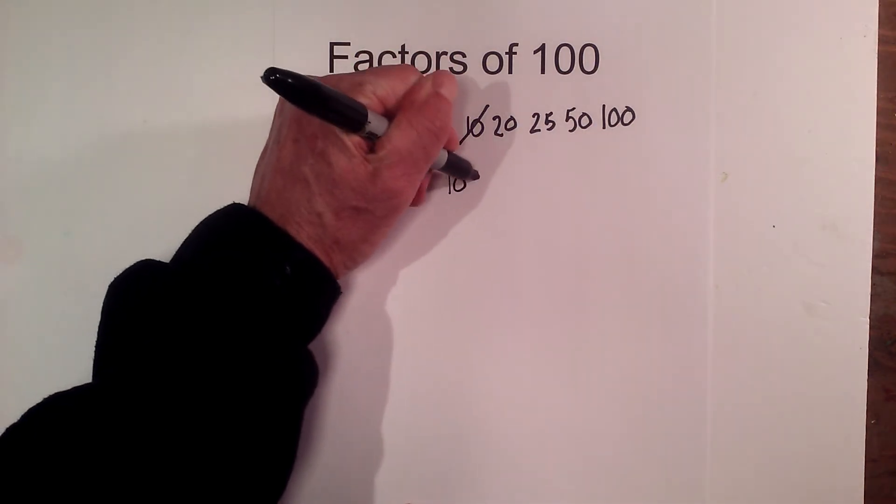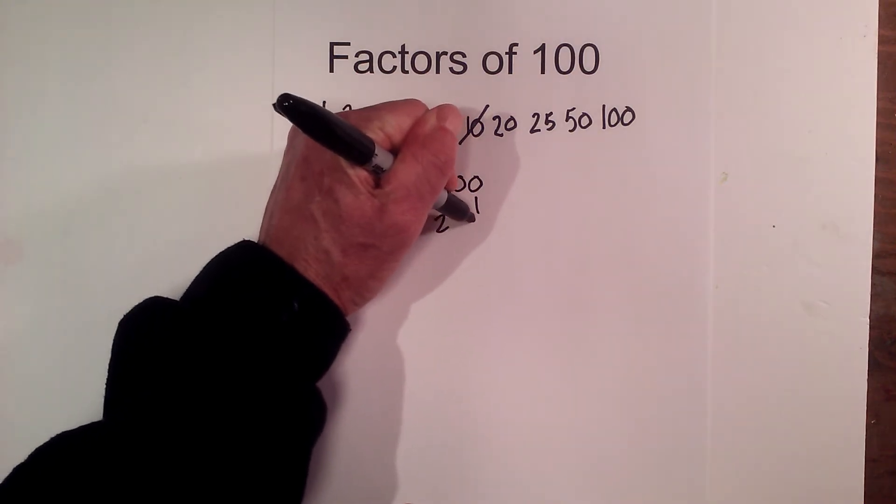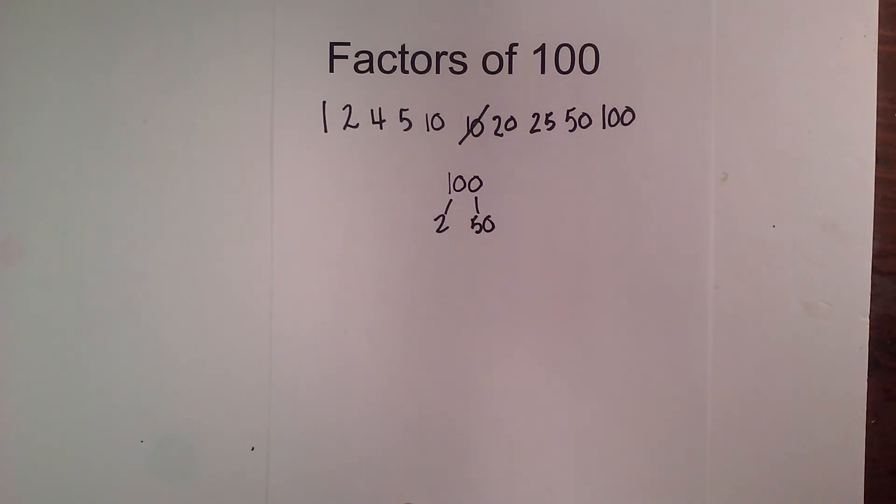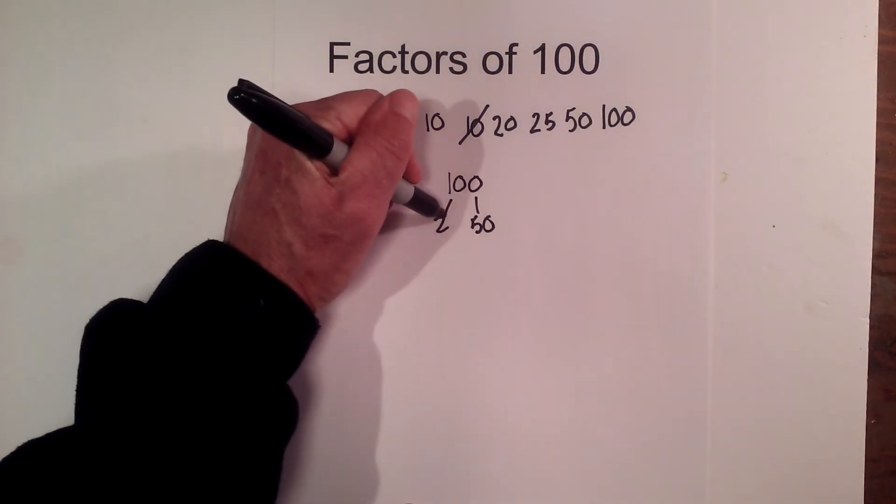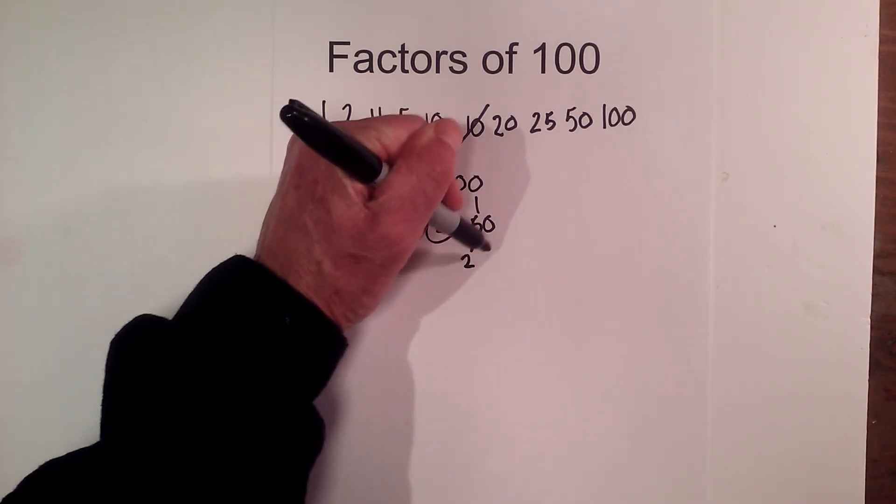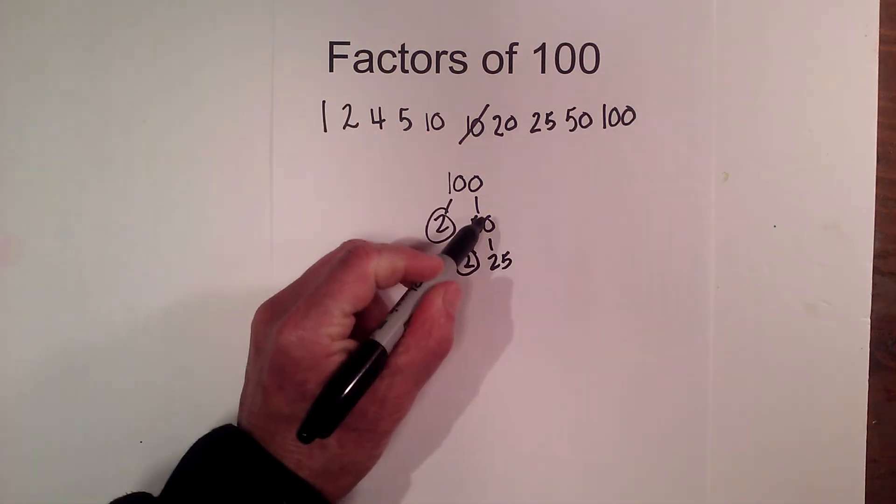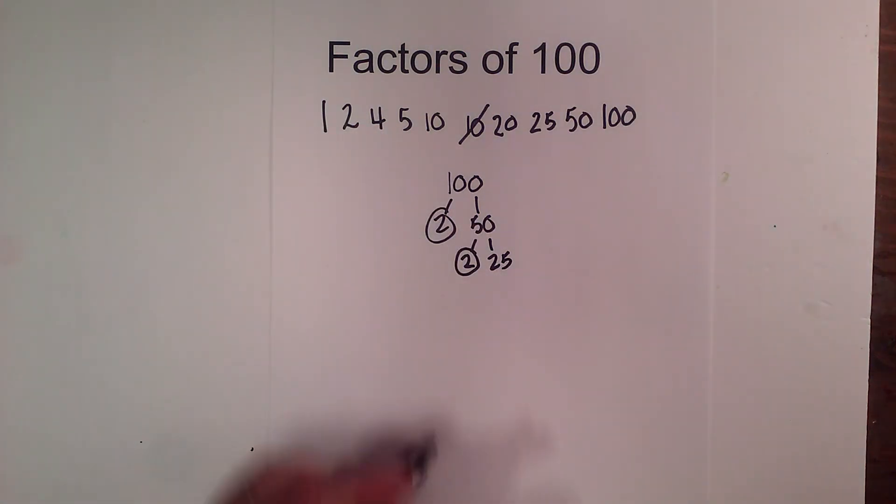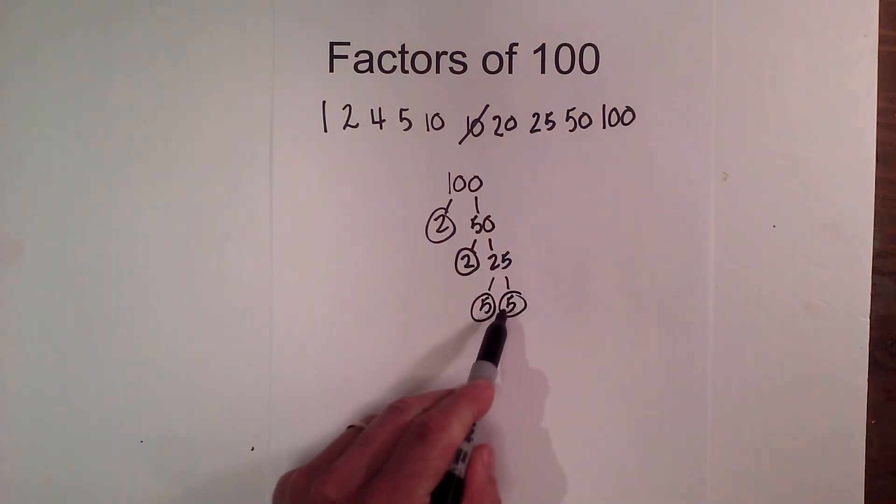Now here's a trick to see if we have all the digits. You can find all the prime factors that go into 100 and then I'll show you a little trick. So 2 goes into 100, 2 times 50 is 100. Circle the 2 because it is prime. Now 2 goes into 50 25 times.